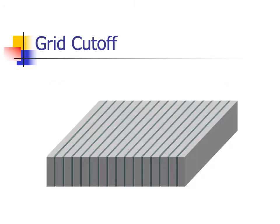Before we begin the topic at hand, I want to take a few minutes discussing the concept of grid cutoff. Grid cutoff occurs when the width of the grid is angled relative to the central ray, or when the central ray is angled across the width of the grid.